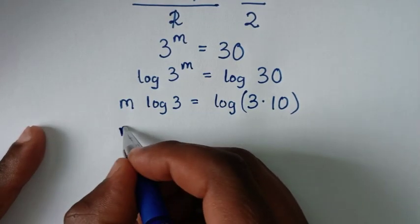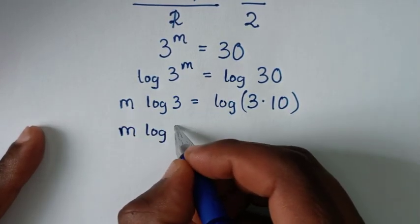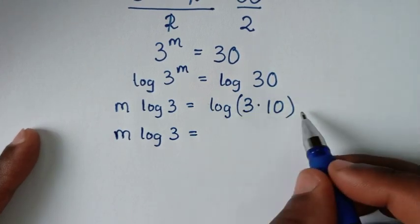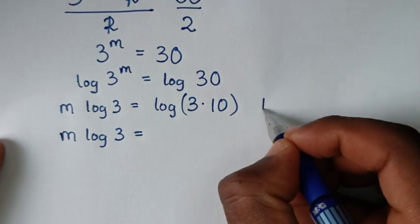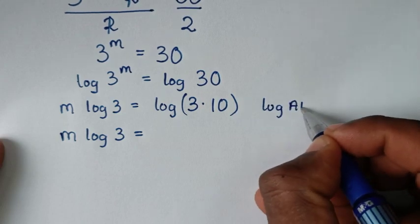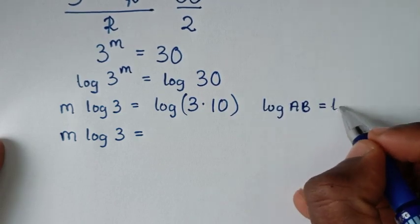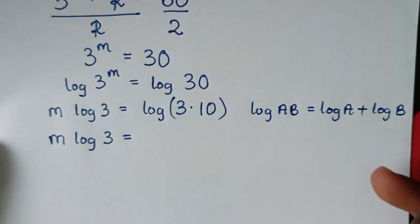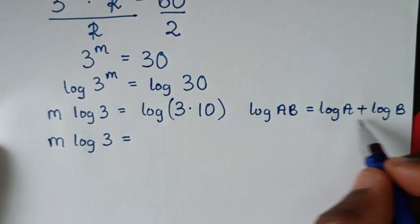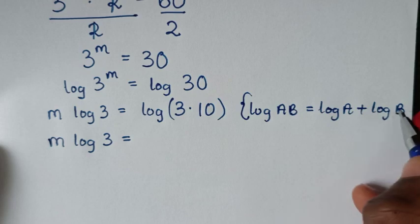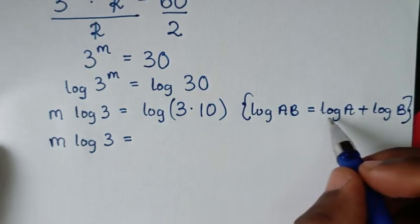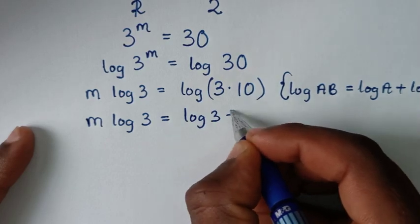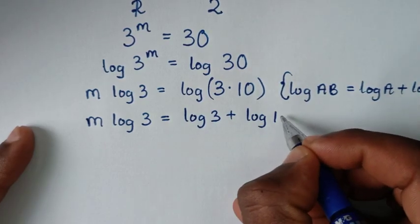So we have m times log 3 equals log of (3 times 10). This is in the form log(a × b) which equals log a plus log b. Applying this rule, log of (3 times 10) becomes log of 3 plus log of 10.